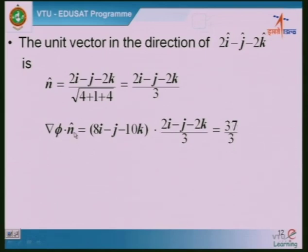The dot product between two vectors gives a scalar, so the final answer 37/3 is a scalar — you can always verify this. Remember the flow: directional derivative = grad φ · n̂. Find grad φ from the function, find unit vector n̂ from the given direction vector, then take the dot product. Going systematically stage by stage, you will not go wrong.